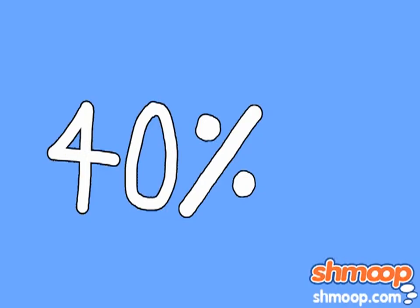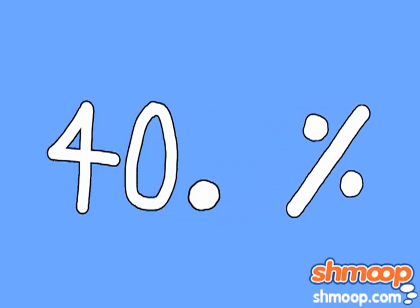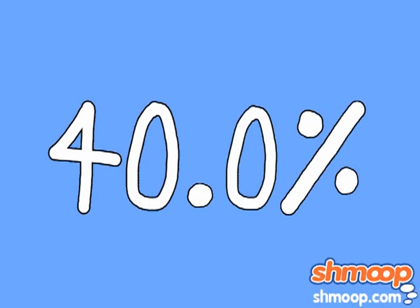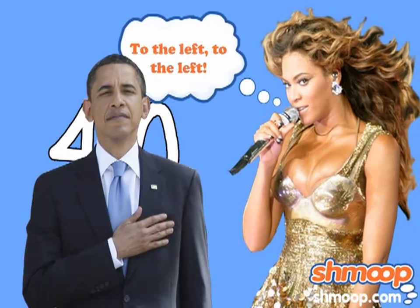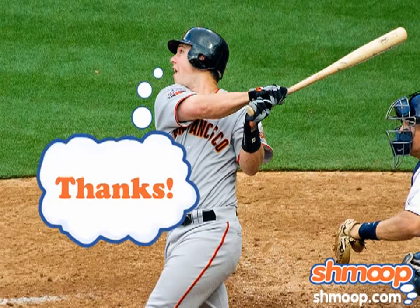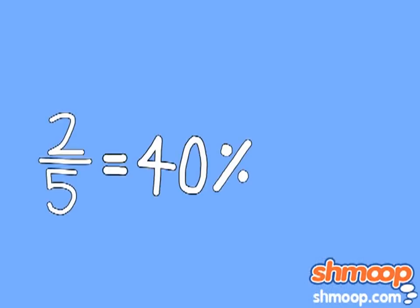That forty percent detention rate could also be expressed as forty point zero percent. When you start listing your detention percentage with a decimal point, it may be a wake-up call to get some help. To convert forty percent into a decimal, we simply move the decimal point two places to the left. This gives us decimal zero point four. Great batting average. So two-fifths equals forty percent equals zero point four.